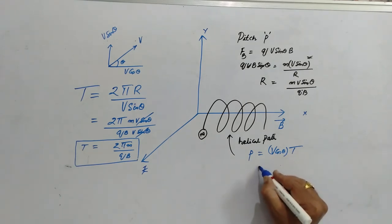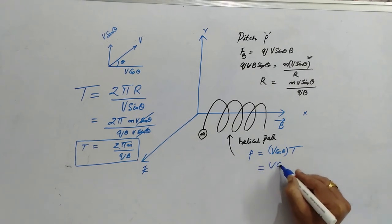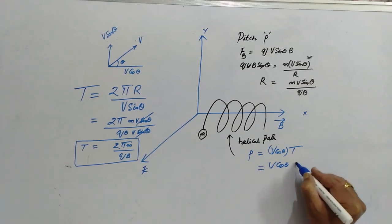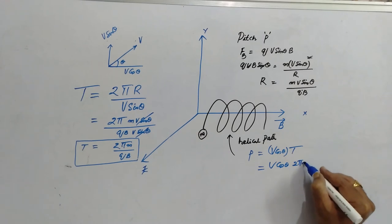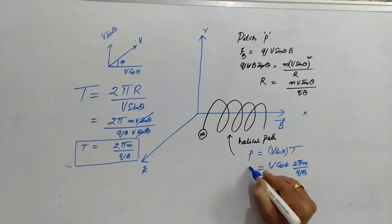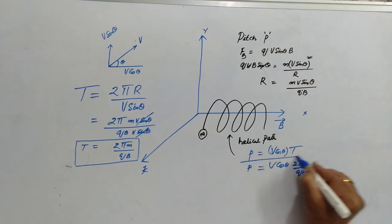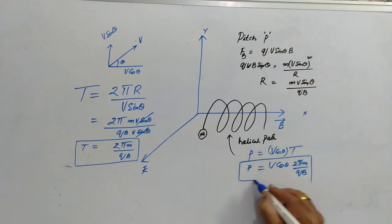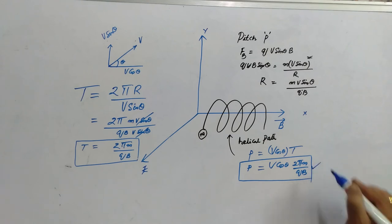Now, let us substitute that here, V cos theta times 2 pi m by Q B. This is the formula for obtaining the pitch.